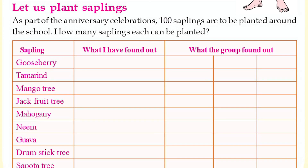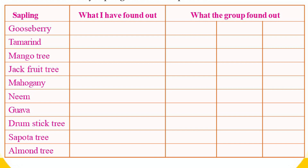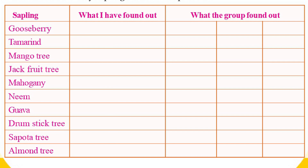Let us plant saplings. As part of the anniversary celebrations, 100 saplings are to be planted around the school. 10 varieties of saplings are to be planted. How many saplings of each variety can be planted? The answer is 10 of each variety, making a total of 100.